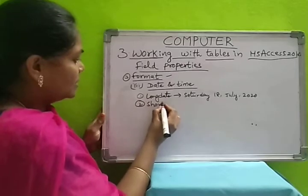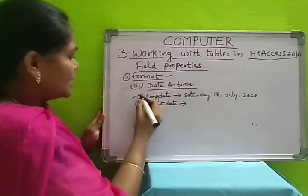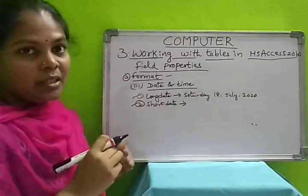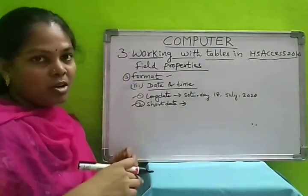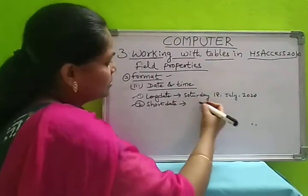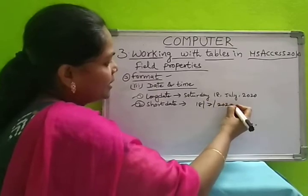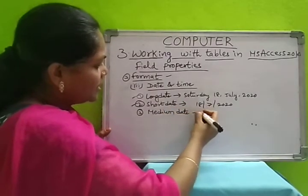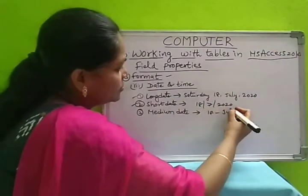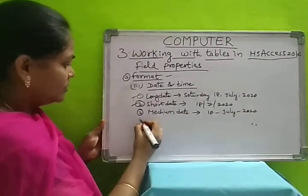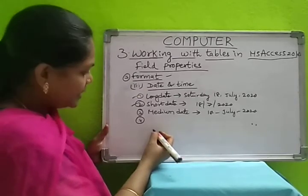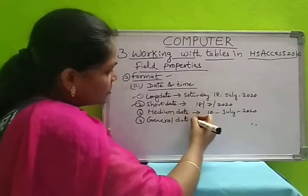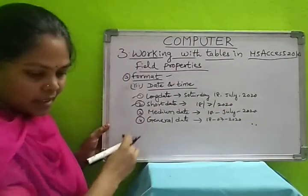Long date shows the full date. Short date shows a shorter form — for example, 18th July 2020. Medium date shows the date with a hyphen: 18-July-2020. General date displays as: 18/07/2020. For time, long time shows hours, minutes, and seconds — like 12 hours, 5 minutes, 20 seconds — and includes AM or PM.